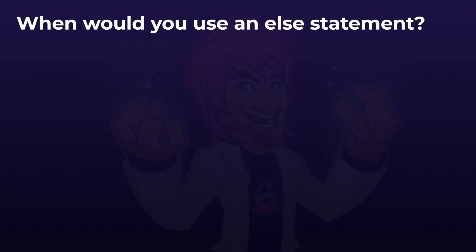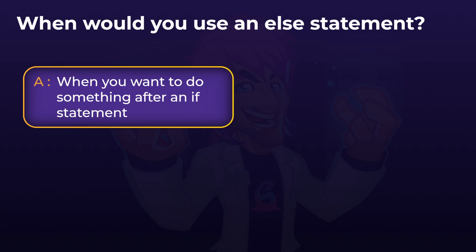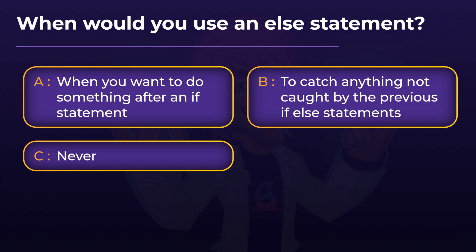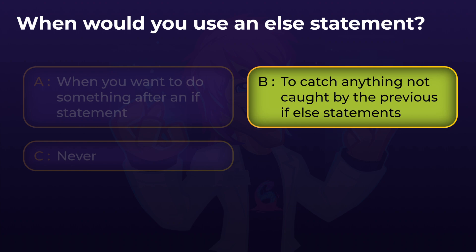And the final question: when would you use an else statement? The answer is B — to catch anything not caught by the previous if and else-if statements. You might think A was right — that you use else when you want to do something after an if statement — however, the else will only run if the if statement is false. If you simply wanted to do something after an if, you'd just write code after the if. The else statement only runs if the if statement failed. So the main reason for else, as we saw with the matrix test, is to catch all the outside answers we are not expecting and do something else.